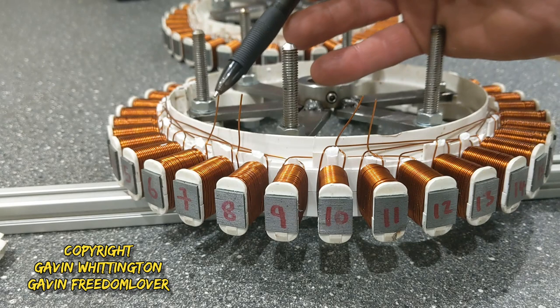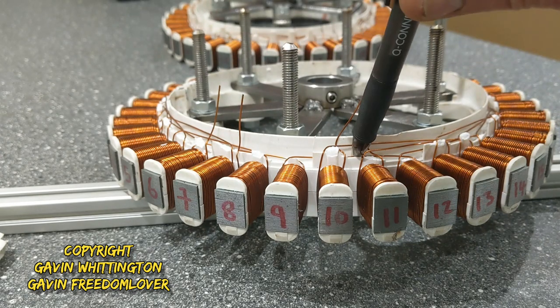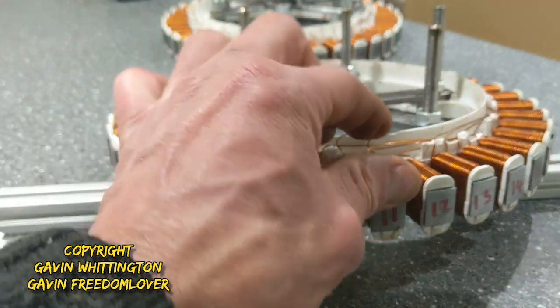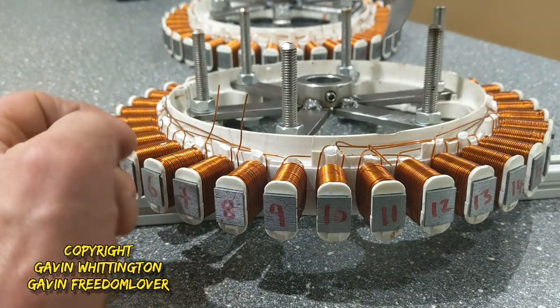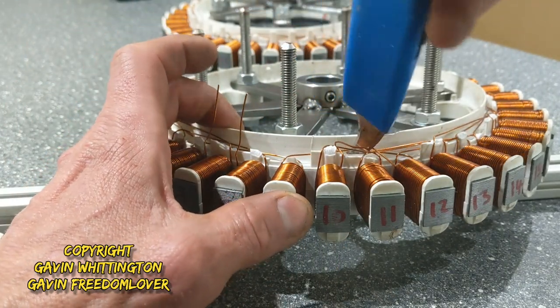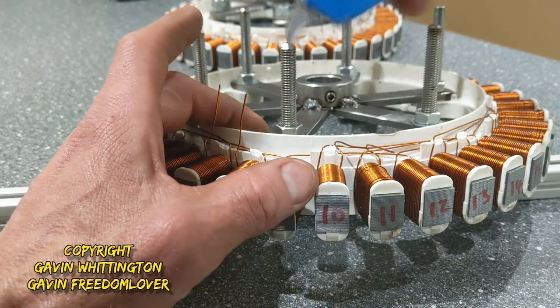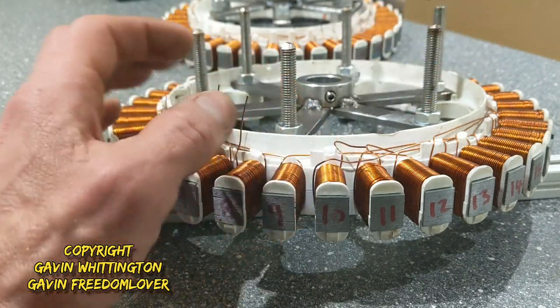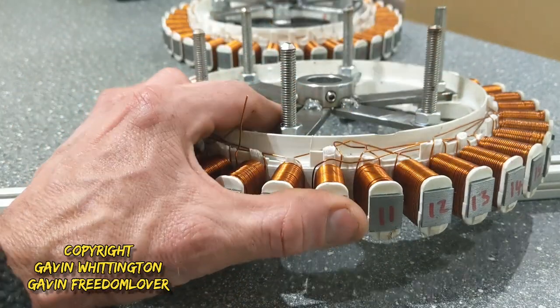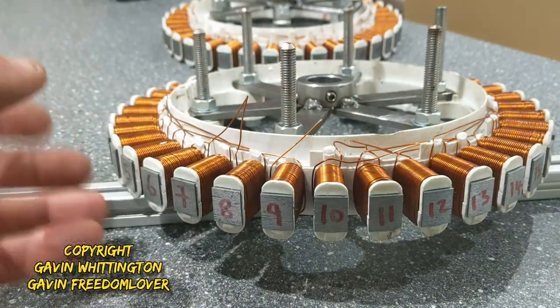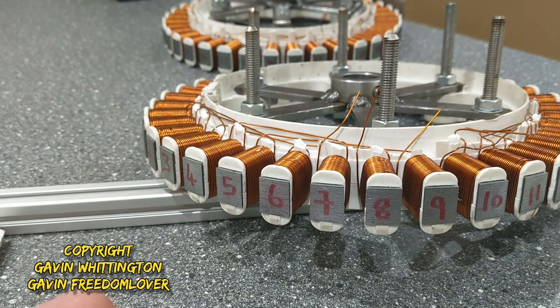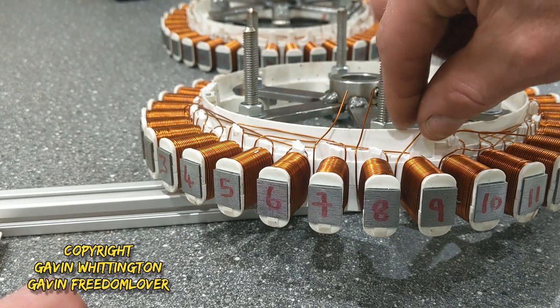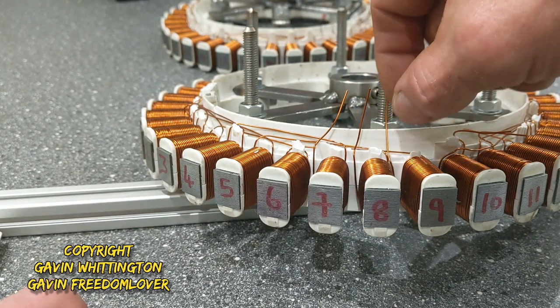We've got the left side of coil 7 and 8, and now we need to get 9 which is a bit more difficult because it's in there. Use one of these blades and hook it round. There we can see we've got the left side of 7, 8, and 9 and now I'm going to clean them up.